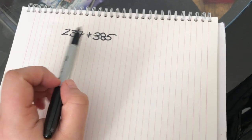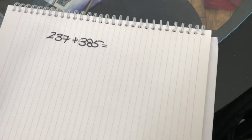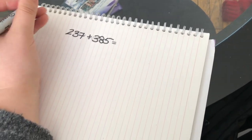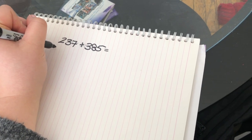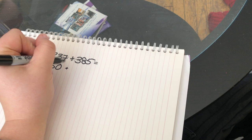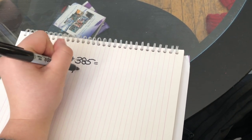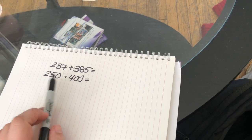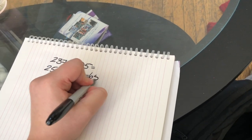So my equation is 237 plus 385. I'm going to start by doing an estimation. We're going to take 237 and make that 250, and 385 will round up to 400, which makes my guess 650.